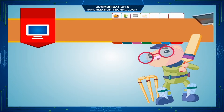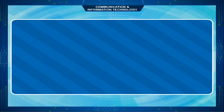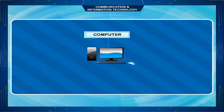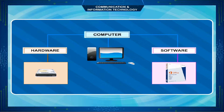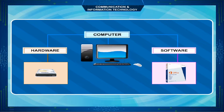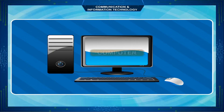A computer system is a complex system to perform specific tasks. It is a combination of hardware and software. Mainly, there are two parts of a computer system: Computer Hardware and Software.